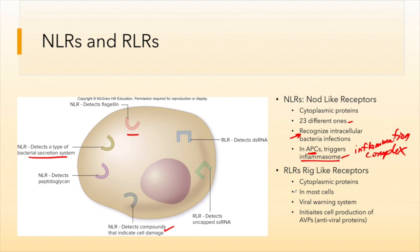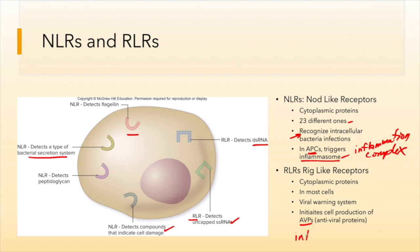RIG-like receptors are also cytoplasmic proteins, but instead of recognizing intracellular obligate bacteria, they recognize viruses. They detect uncapped single-stranded RNA — if the 5' cap is missing, a RIG-like receptor will recognize it as viral RNA. They also recognize double-stranded RNA, another form of viral RNA. RLRs are found in almost all cells and serve as the early warning system for viral infection. They are responsible for initiating production of antiviral proteins (AVPs) as well as the interferon response.